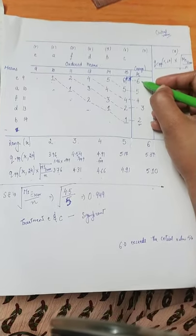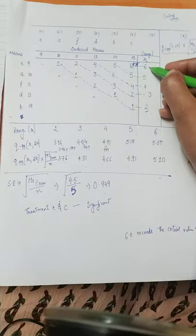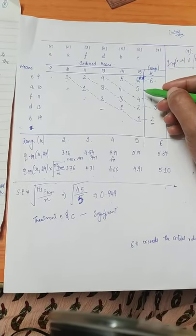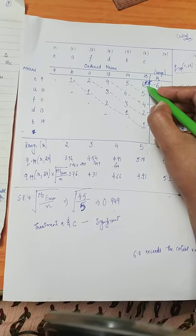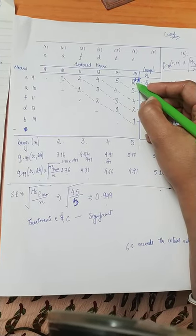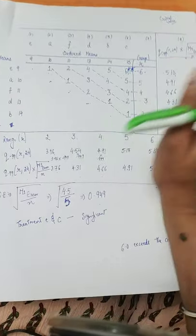If that is significant, then we will continue doing the testing. Now we have to test the next treatment means. If this is not significant, then we would have stopped the Newman-Keuls test over here only, and then we would have said that no treatment means is significant.